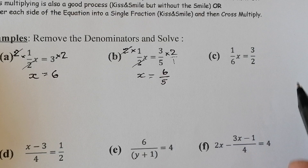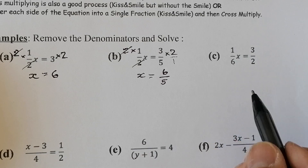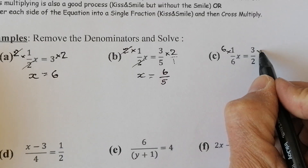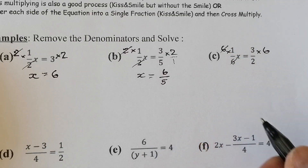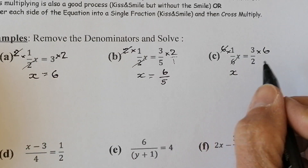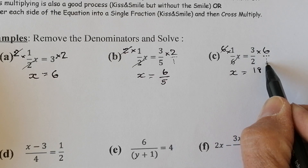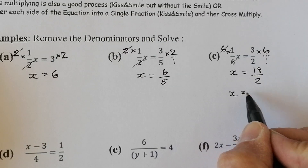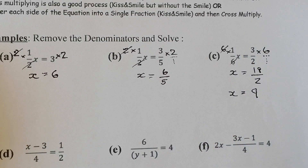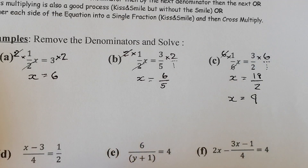Example C: one-sixth x equals three over 2. I'm going to multiply by 6 on both sides. The sixes cancel out, leaving x on the left. On the right, 3 times 6 gives 18, over 2 times 1 which is 2. So I get 18 over 2, which simplifies to 9. Doing the same thing to the left as to the right — or to everything if there are three parts — x equals 9.